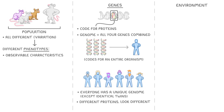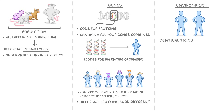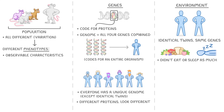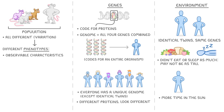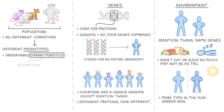The way we look and function though isn't just due to our genes — it's also due to the environment that we're exposed to. For example, a pair of identical twins may have the same genes for being tall, but if one of them didn't eat or sleep as much as the other, then they might not be as tall. Or if one of them spent more time in the sun, then their skin would be darker. Most of our characteristics are determined by the interaction of our genes and our environment.